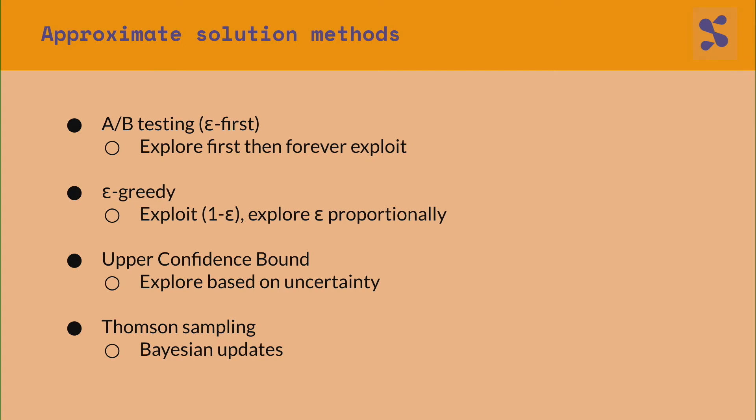A slightly more sophisticated choice is epsilon-greedy methods, where you always choose the best action at the current time, but for a small fraction of time — epsilon — you explore random opportunities. This makes sure you don't get stuck in a sub-optimal arm.